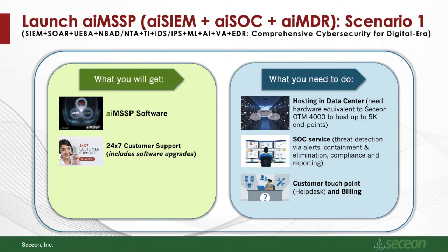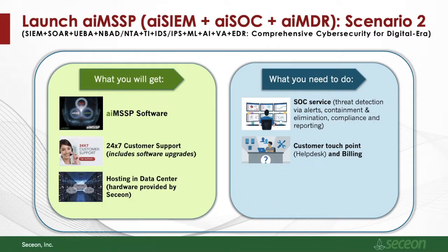As far as the rollout is concerned, you can get the AI MSSP software and do your own hosting in your data center or cloud, and offer the services to your customers from there. Another option — especially for MSSPs who want to host from a secondary data center or cloud — is that they can manage their SOC, SIEM, and MDR offerings from their own locations. This enables them to roll out services on day zero.